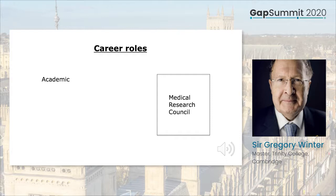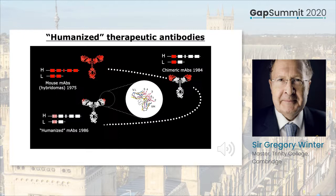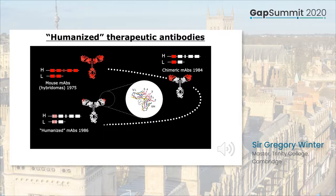I wondered if we could use protein engineering to turn mouse antibodies into human ones, simply by transferring the antigen binding regions. Antibodies are Y-shaped molecules; the antigen binding site is at the tips of the Y, and the stem recruits antibody effector functions. Imagine we start with a mouse monoclonal antibody: we could transfer either just the antigen binding domains to a human antibody, giving an antibody that's two-thirds human, or just the antigen binding loops, giving an antibody that's about 95 percent human.